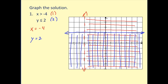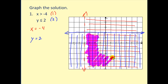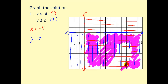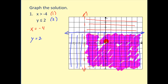To make this more clear, we can clearly identify the double shaded region. When you're doing your homework on the computer, the computer will only want you to shade the double shaded region.